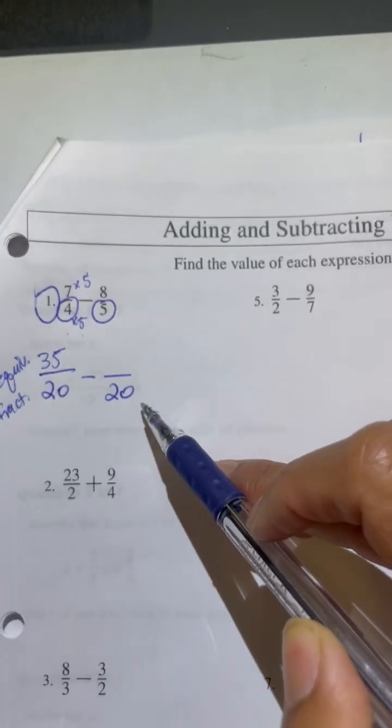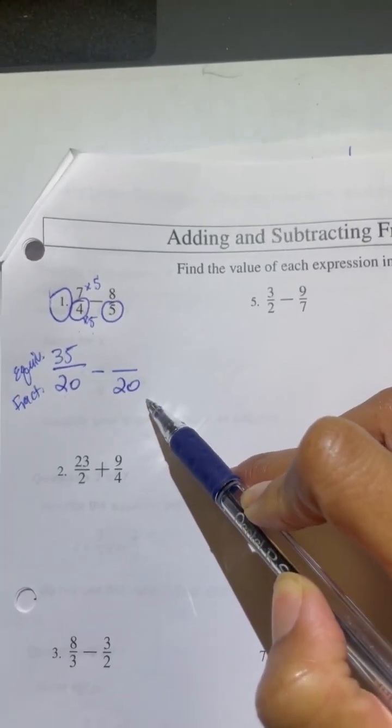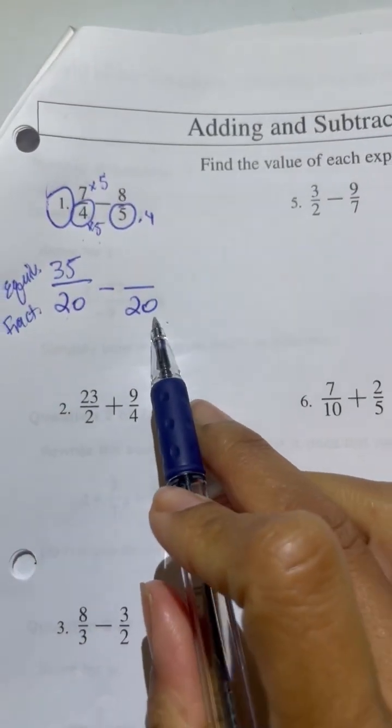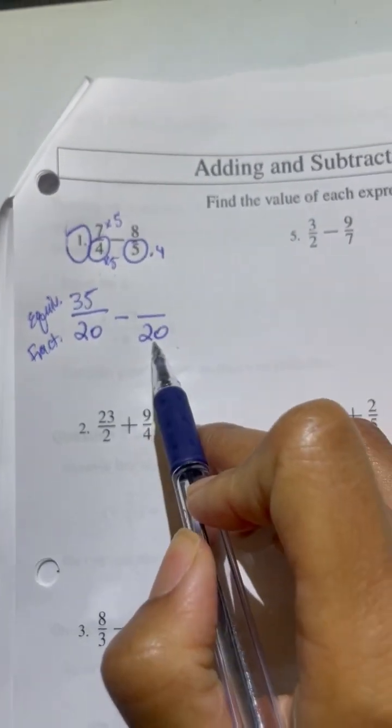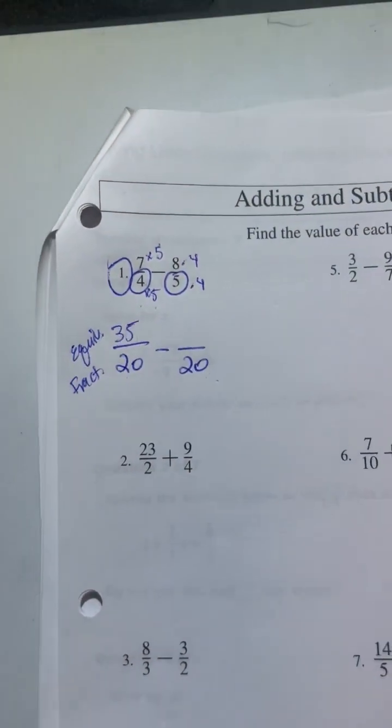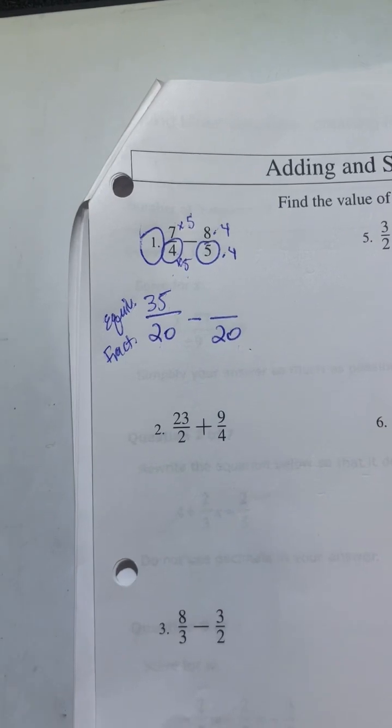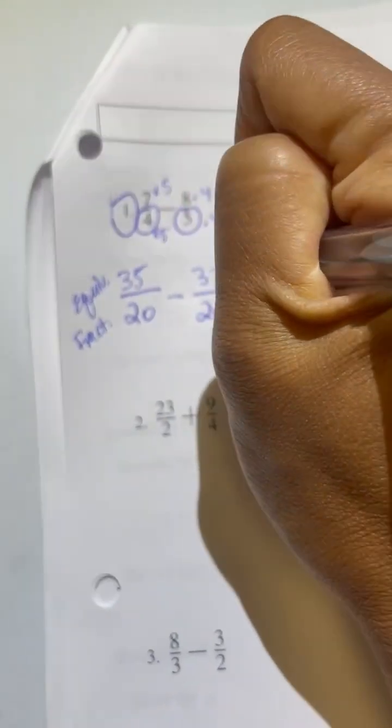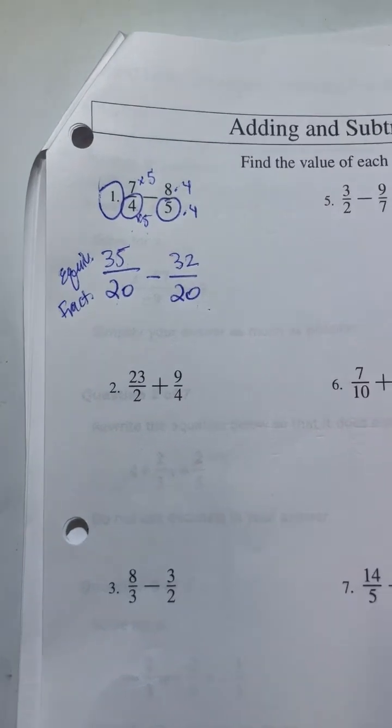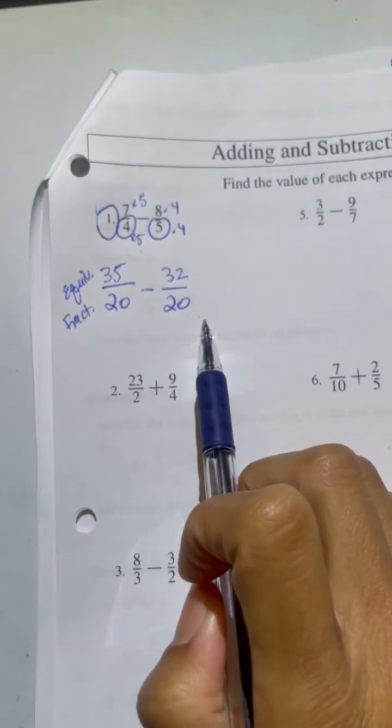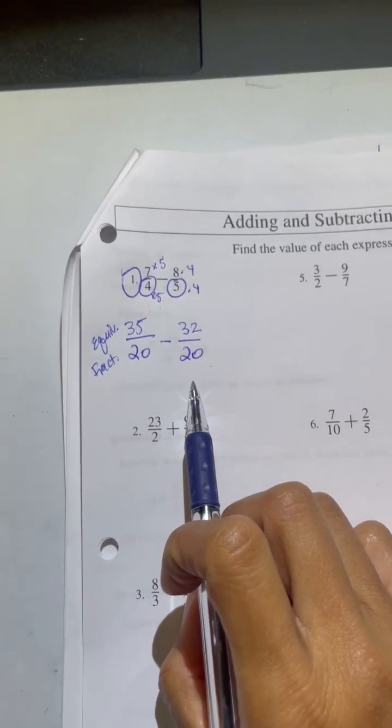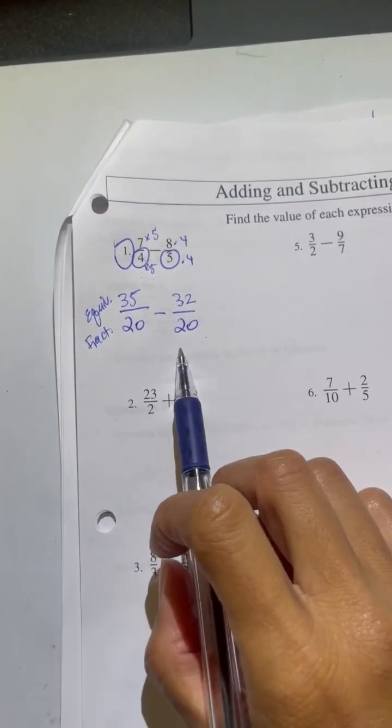So to go from 5 to 20, what do I need to multiply by? 4. So 5 times 4 will give me 20. Whatever I do to the bottom, I must do to the top. So I put that there. So 8 times 4 is 32. Great. The power of memorizing your multiplication table. So now they're in a different form. They're the same animals, just written differently.